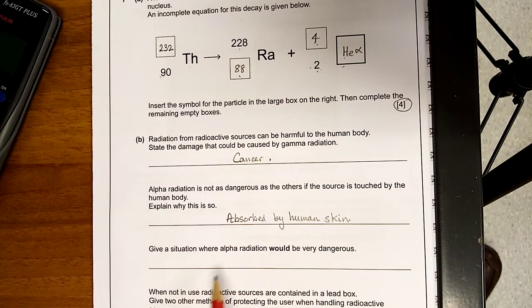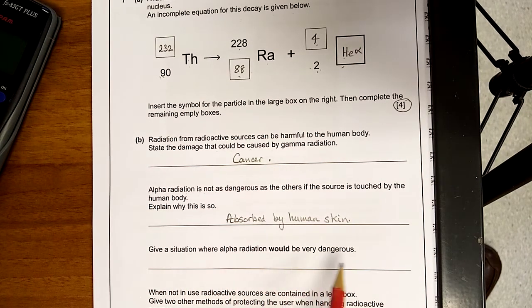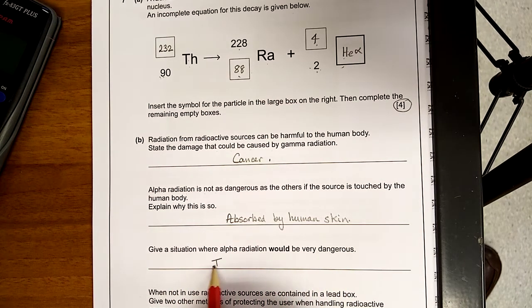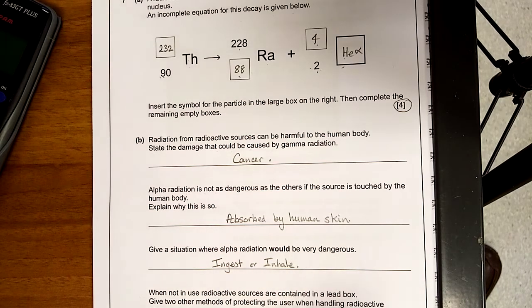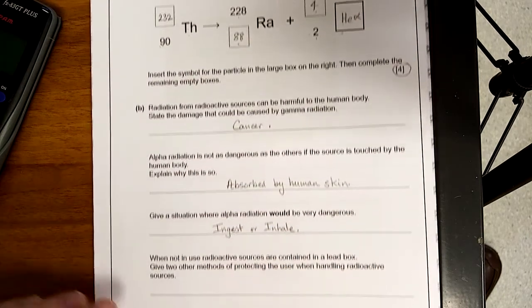Give a situation where alpha radiation would be very dangerous. So if you ingest, in other words, eat it, or inhale, breathe it, it enters the body then, and then it's very dangerous. It ionizes a lot.